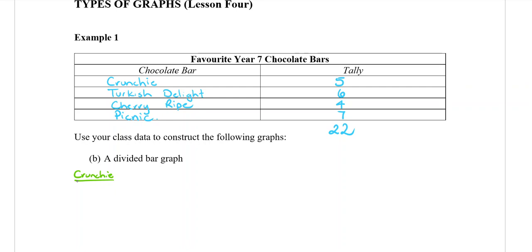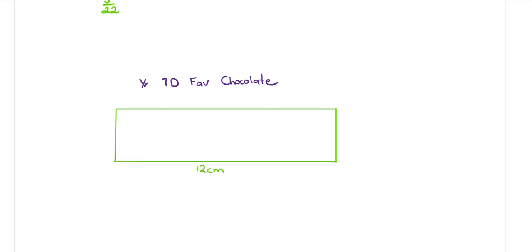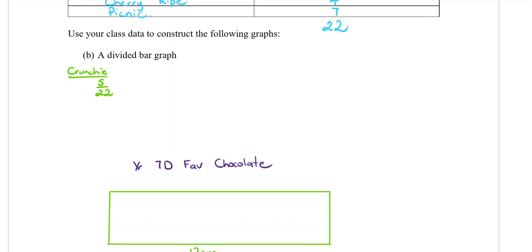We need to work out what fraction of each chocolate bar that we have. So starting with Crunchy, five out of 22 people liked Crunchies. Now when you're doing this yourself, there's no set rule that says how long you're going to make this bar, but in all the answer booklets they've used a 12 centimeter bar because it fits very nicely on the page. So we're going to use a 12 centimeter bar as well. What you need to do is make this fraction and then you times it by 12 because that will tell you how much of the 12 centimeter bar you need.